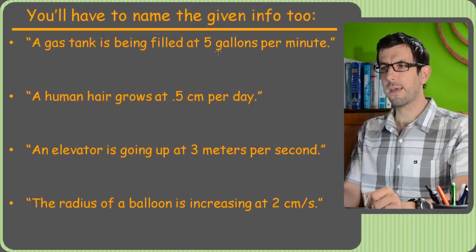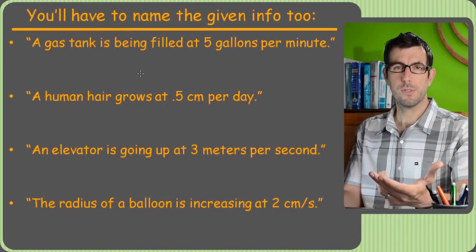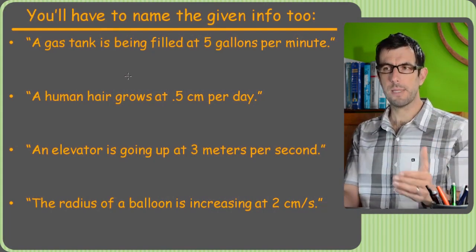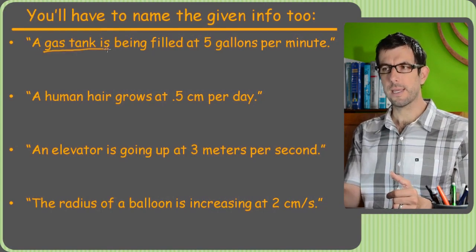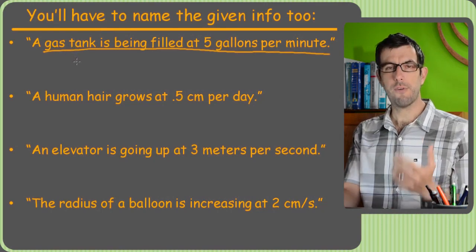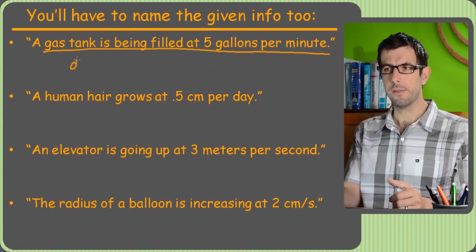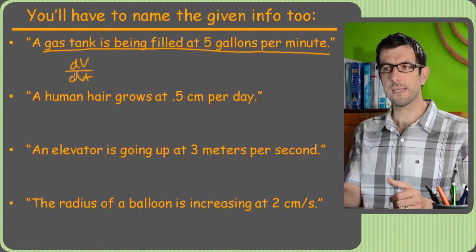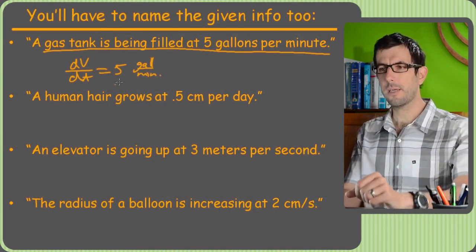A gas tank is being filled at five gallons per minute. Hmm. Alright, so what we're looking at now is a part of the problem where in the previous two slides we looked at if they're asking for something, what's the name of that thing? Now we're talking about given information. So if a problem began that a gas tank is being filled at five gallons per minute, what they're saying is that's the rate of change of volume of gas because the gas is coming into the tank. So that would mean that the rate of change of volume of the gasoline in the tank is five. And we could put you know, gallons per minute units on it just to keep track of stuff, whatever.